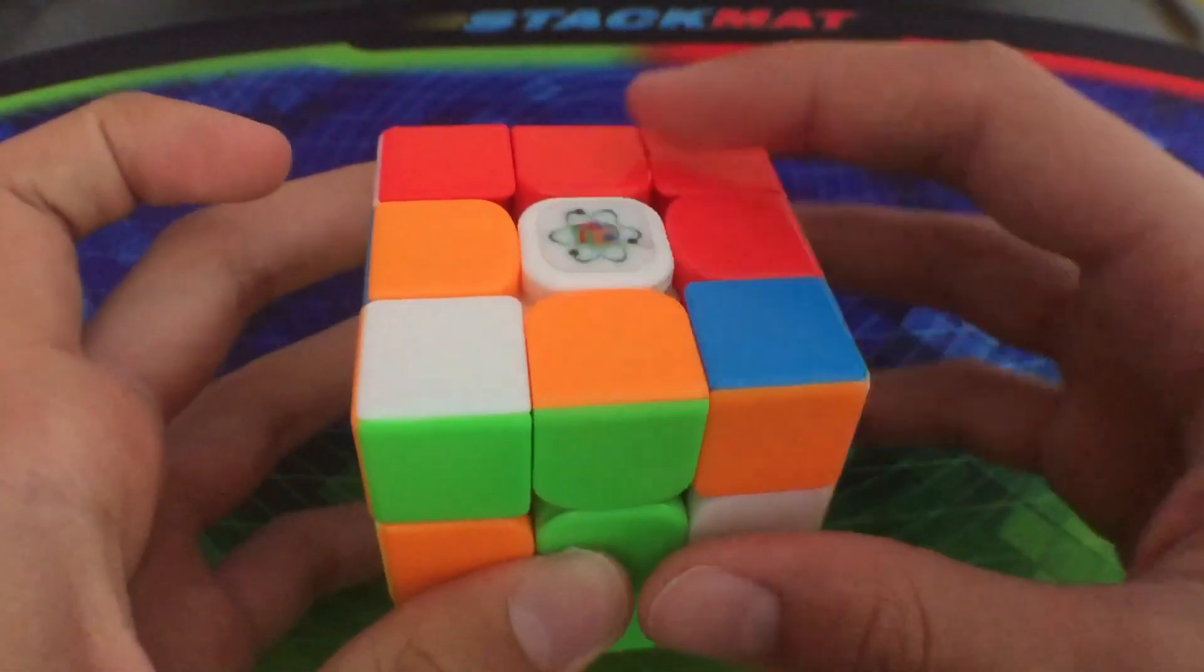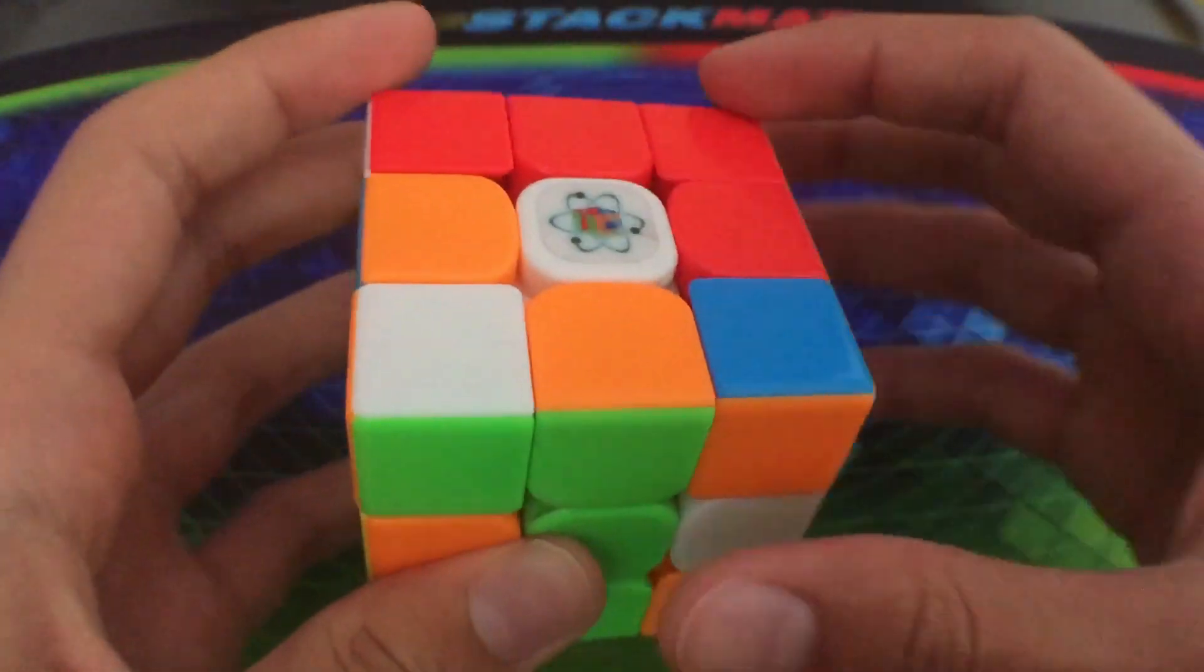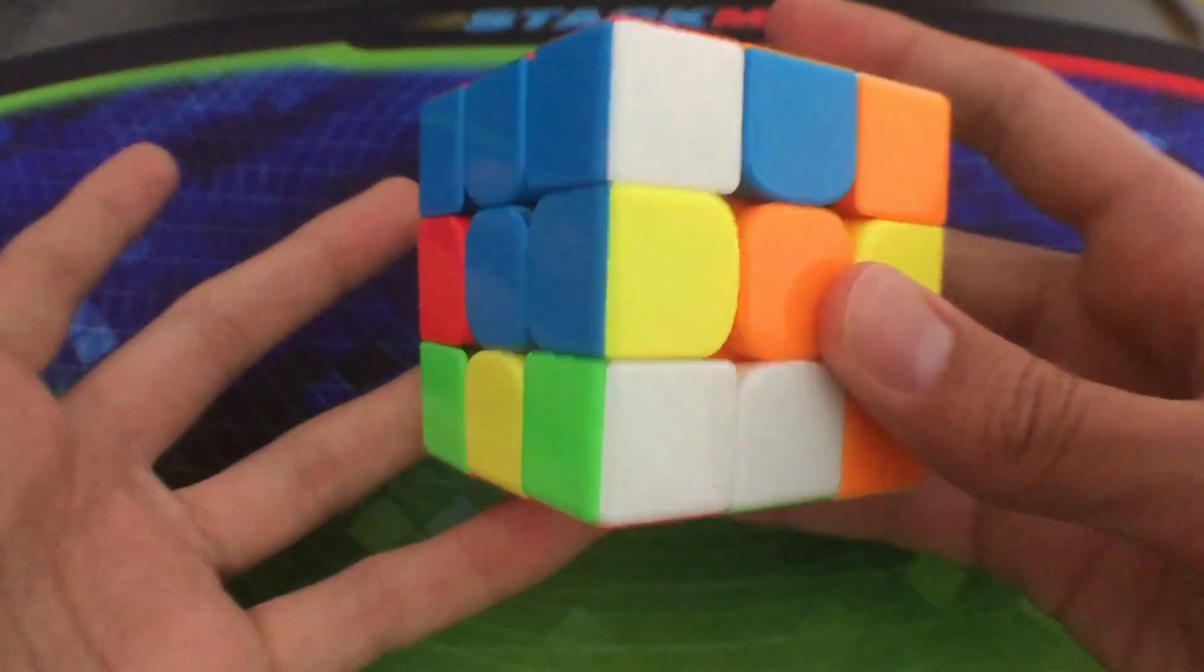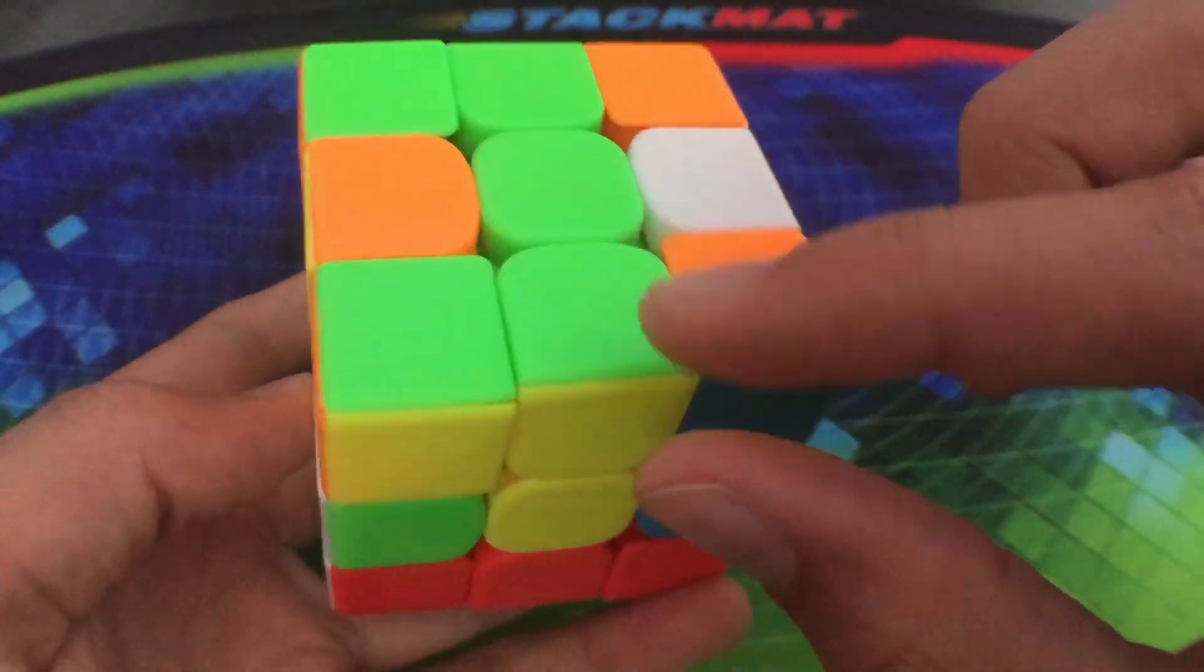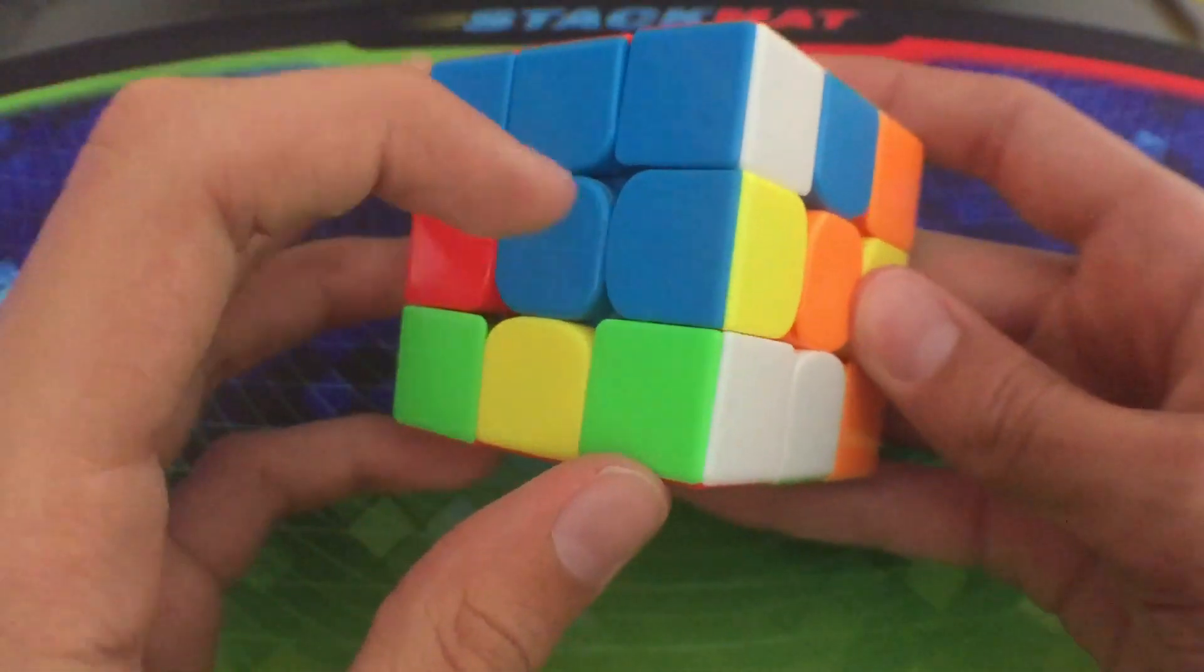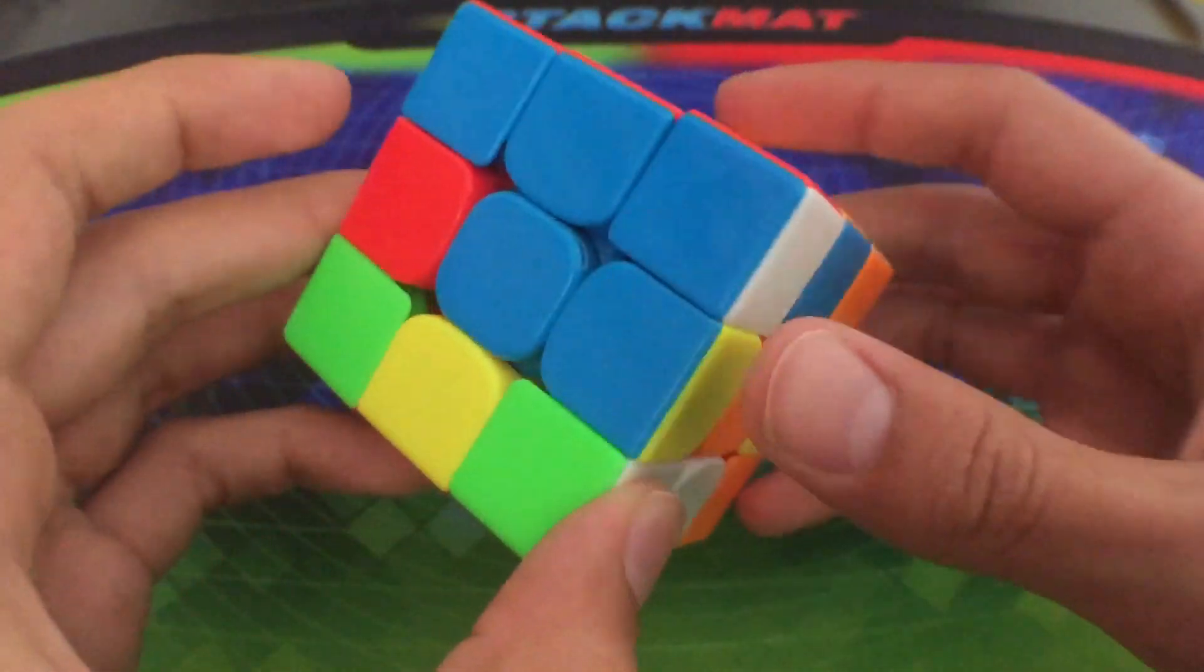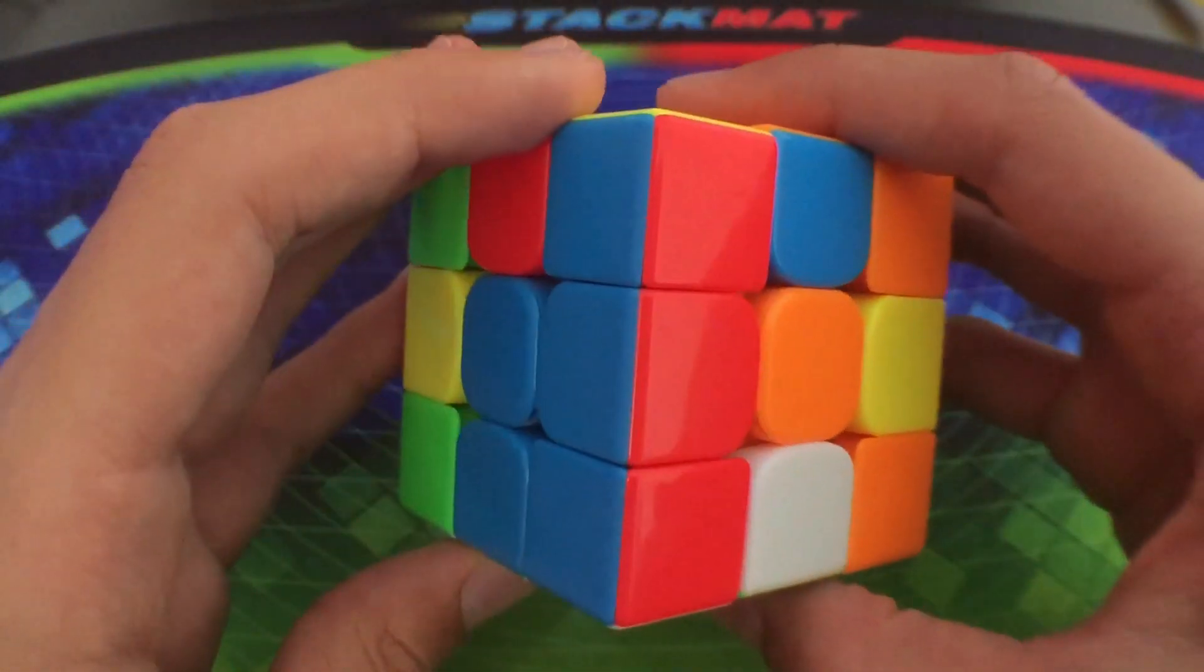So this was actually a yellow cross, not a white cross. I am dual color neutral. The first thing I saw was we have this piece which is already solved, which is good, and this blue and yellow edge which is one move away, so it's just an L.